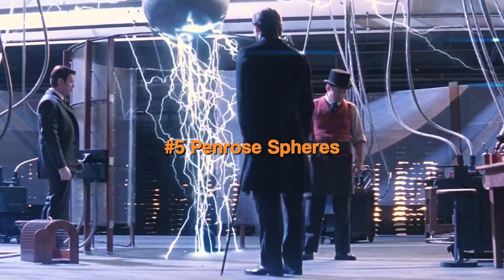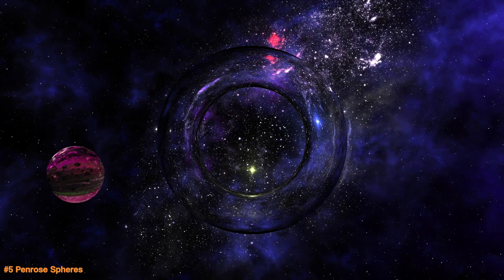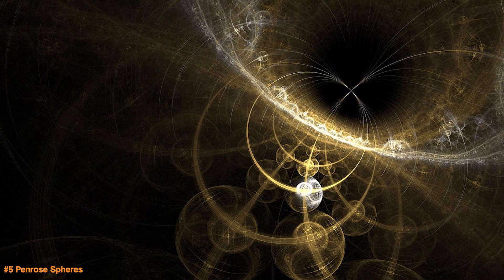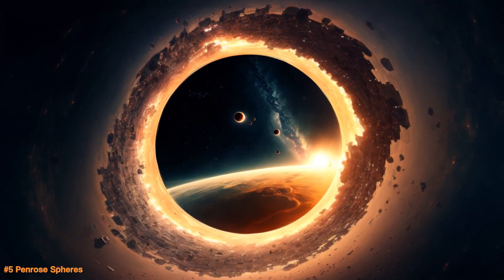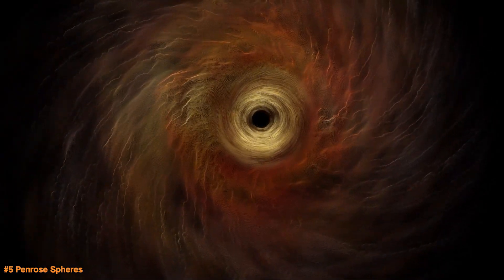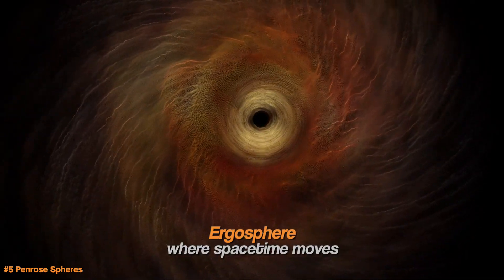Because humans would need more energy, they would undoubtedly tap the vast energy resources that are black holes. This is where Penrose spheres come into play. A Penrose sphere is an idea for getting energy from a spinning black hole. Black holes spin really fast and have a special area around them called the ergo sphere where space-time itself moves.